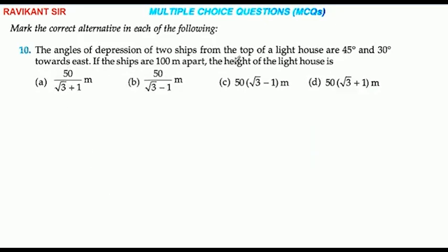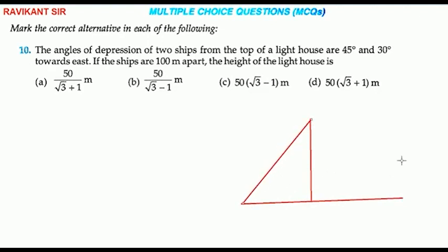The angle of depression of two ships from the top of a lighthouse is 45 degrees and 30 degrees. If the ships are 100 meters apart, find the height of the lighthouse. Here, say two ships are observed — the angle of depression is 45 degrees and 30 degrees. We suppose points A, B, C where angle of depression is 45 degrees and 30 degrees.